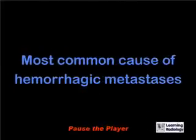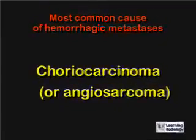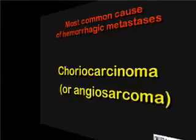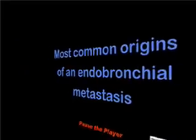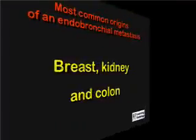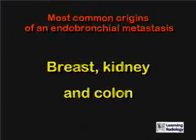What is the most common cause of hemorrhagic metastases to the lung? Choriocarcinoma or angiosarcoma. What are the most common origins of an endobronchial metastasis? Breast, kidney, and colon primaries.